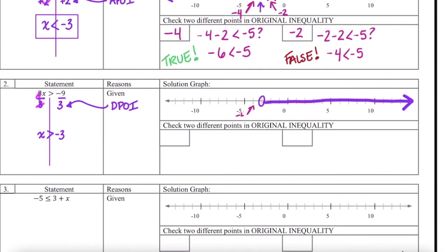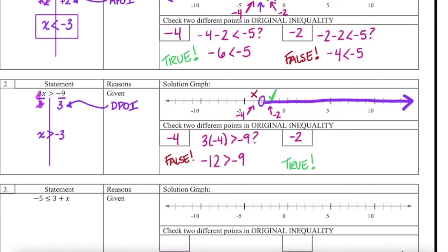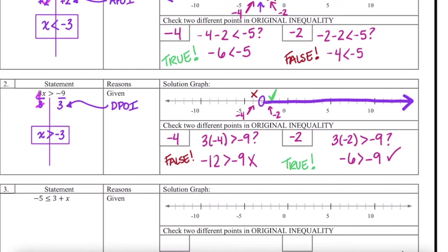We're still going to check negative 4 from the left and negative 2 from the right. This time, negative 4 is not part of our solution set, so it should be false; and negative 2 is part of our solution set, so it should be true. Is 3 times negative 4 greater than negative 9? Is negative 12 greater than negative 9? No — this is false, which is what we wanted because negative 4 is not a solution. Does 3 times negative 2 give greater than negative 9? Is negative 6 greater than negative 9? Yes, and that matches our solution graph because negative 2 is on our line. Now we know our border point and solution set are both in the right spot.